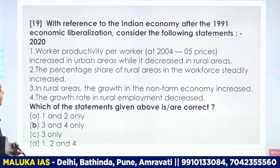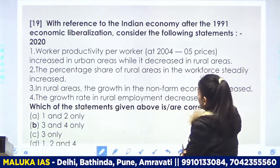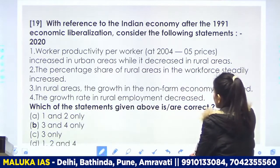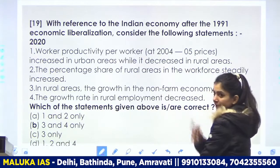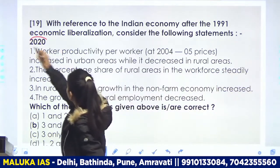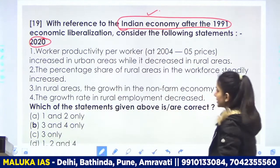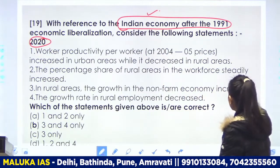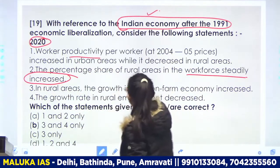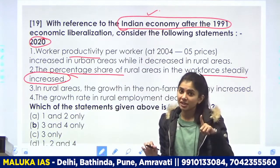Next question: with reference to Indian economy after 1991 economic liberalization, consider the following statements. They are saying worker productivity per worker increased in urban areas while it decreased in rural areas. They are talking about the 1991 time period. Next, they are saying the percentage share of rural area in the workforce steadily increased. Also, consider the difference between total production and productivity.